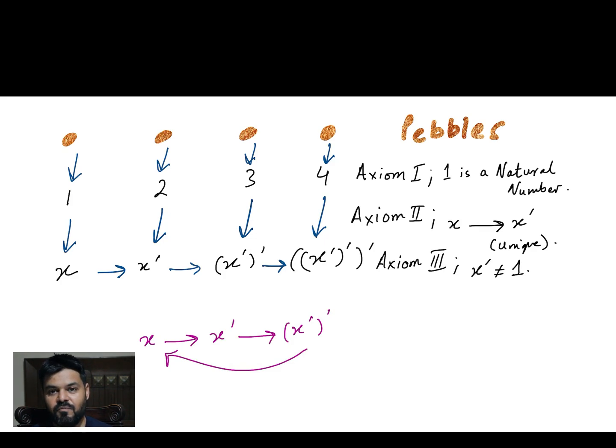What did our fourth axiom tell us? If x prime is equal to y prime, then x is equal to y. It means that if two successors of two numbers are equal to each other, it means those numbers were equal to each other to begin with.